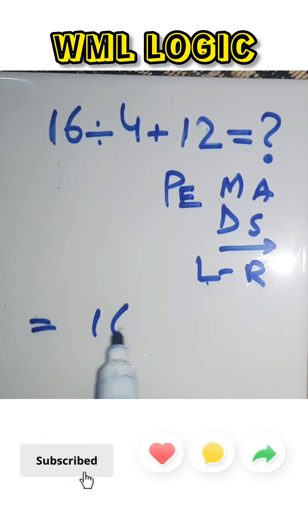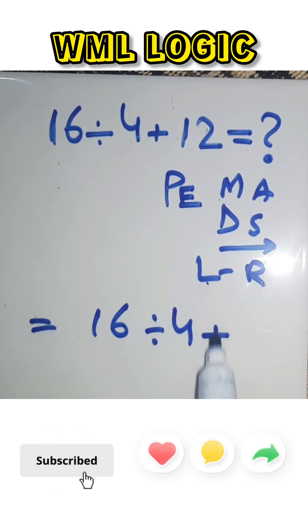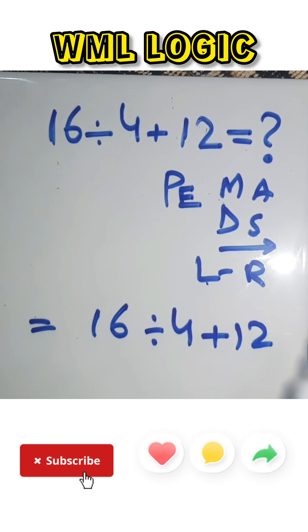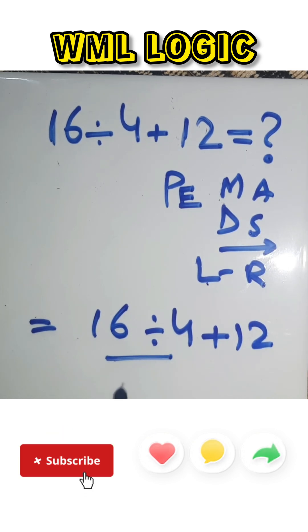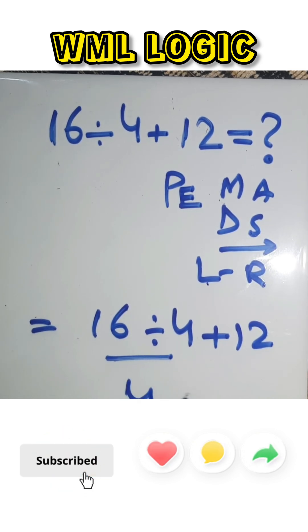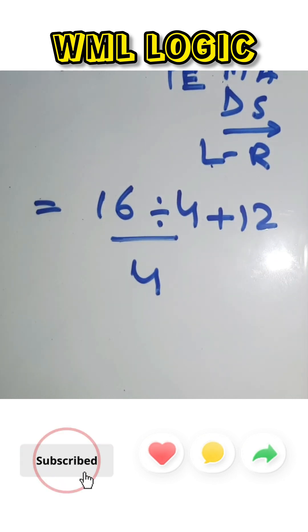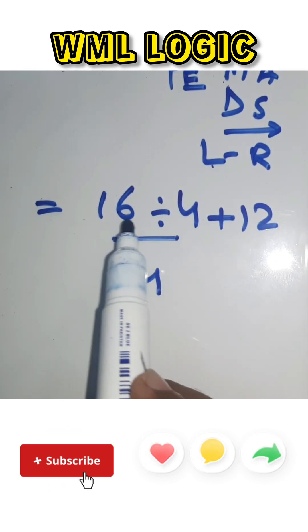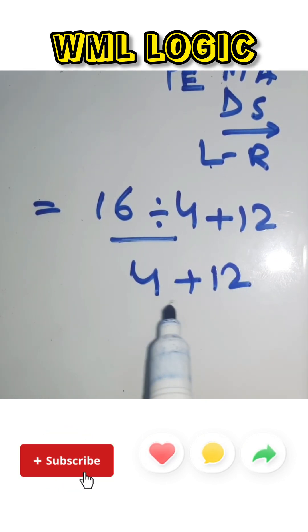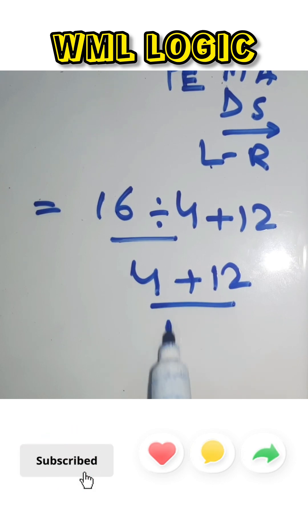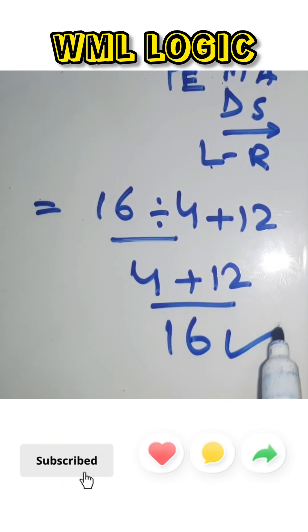16 divided by 4 plus 12: 16 divided by 4 gives us 4, and 4 plus 12 gives us 16. This is the correct answer.